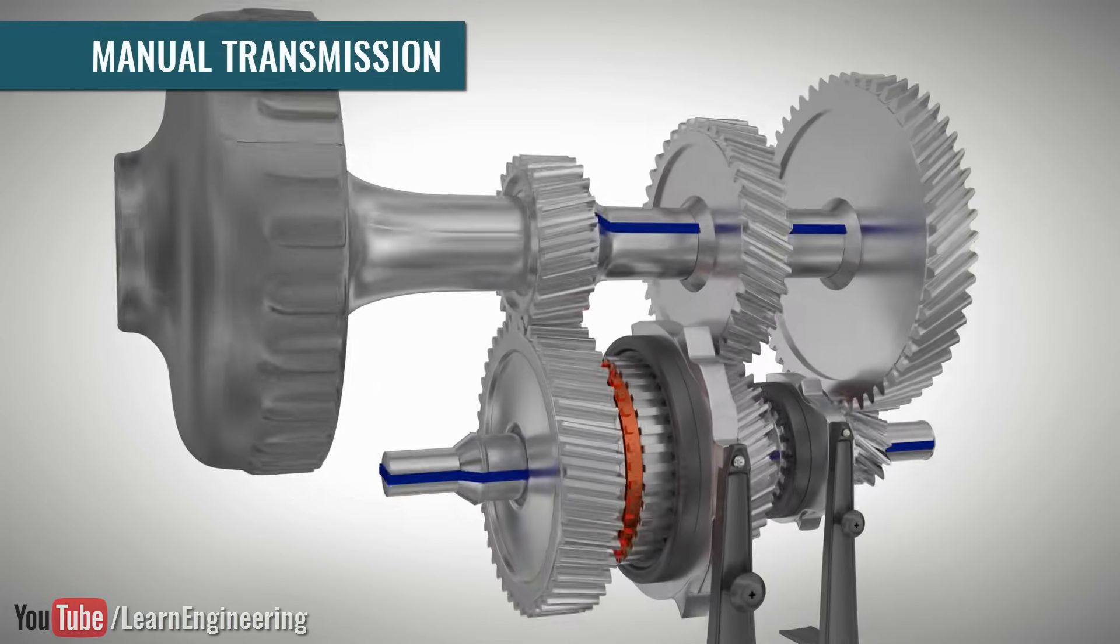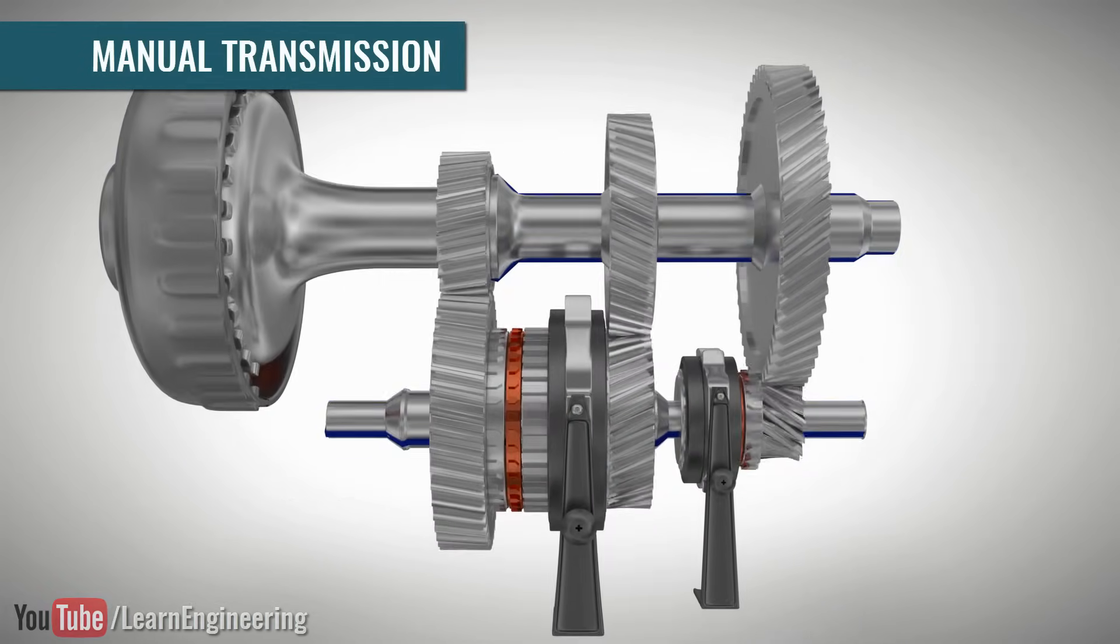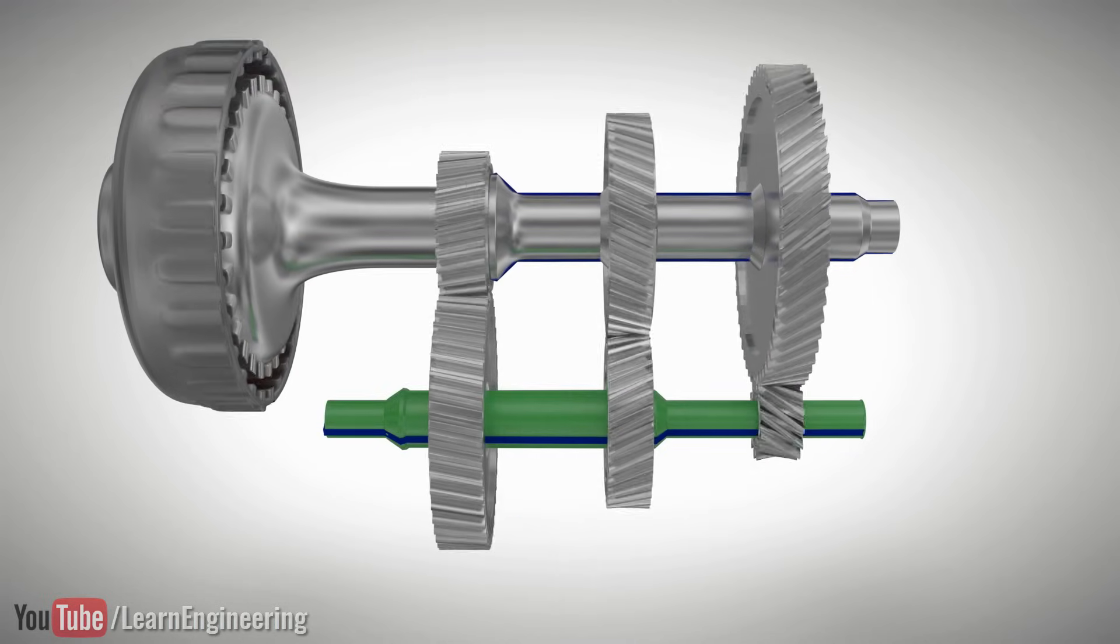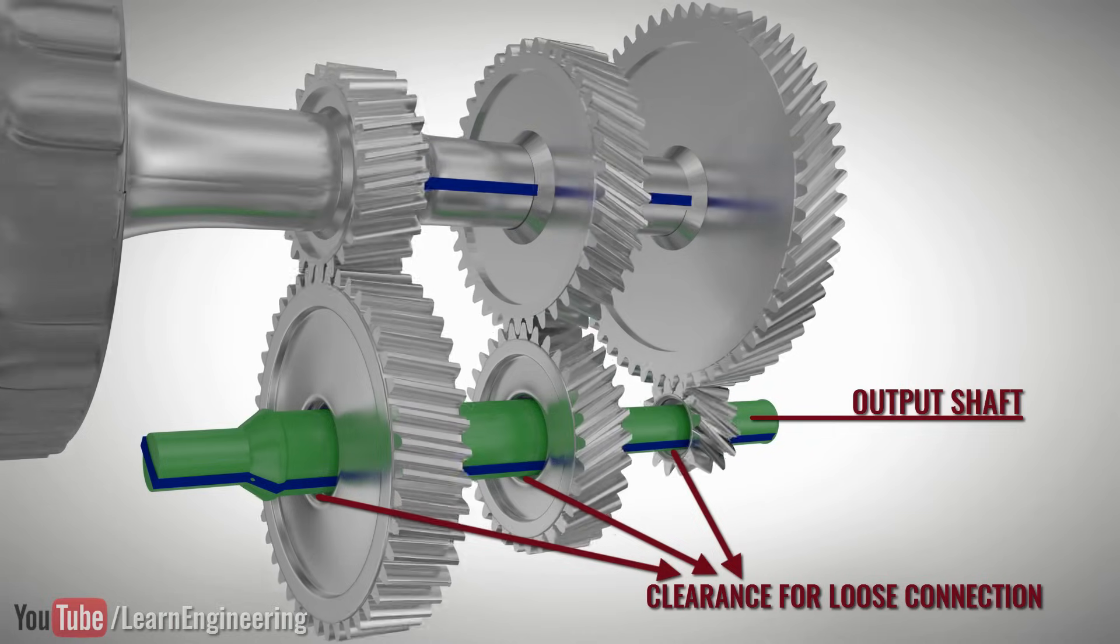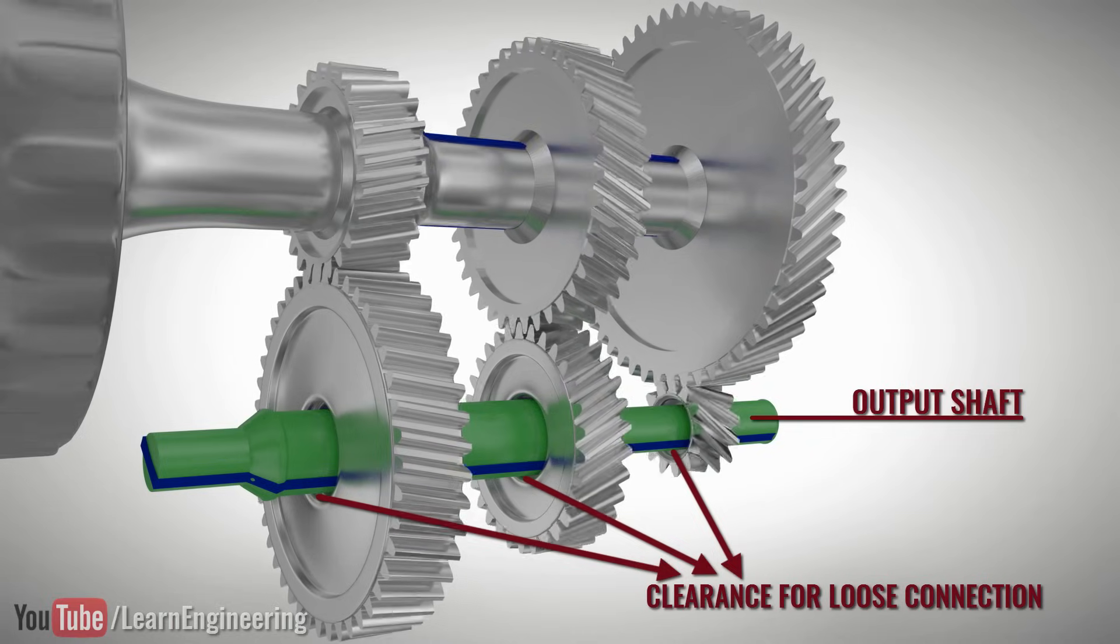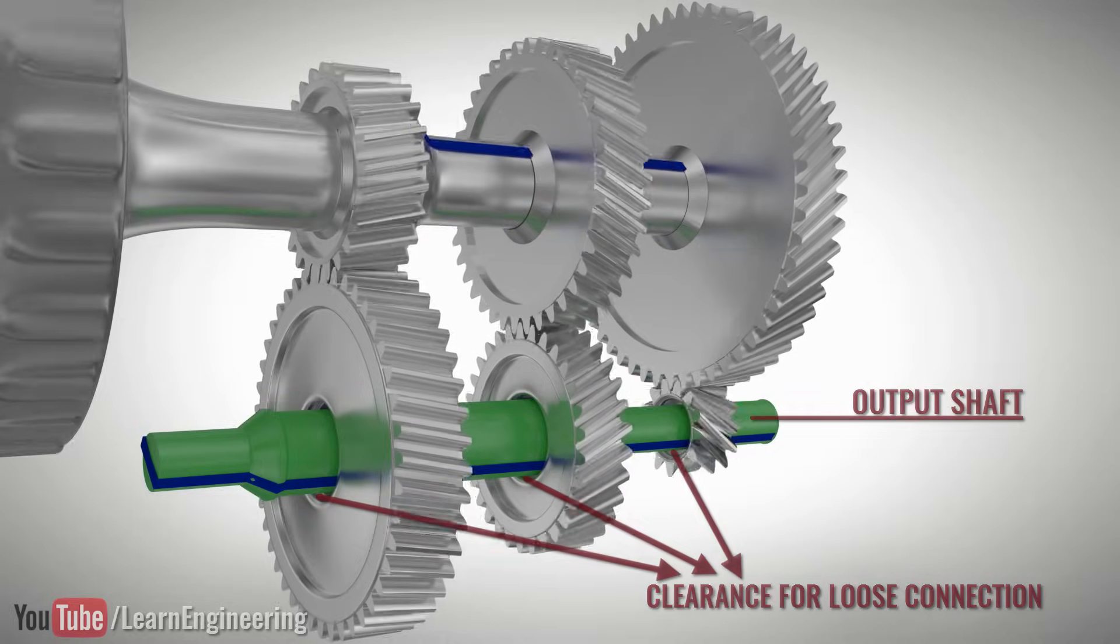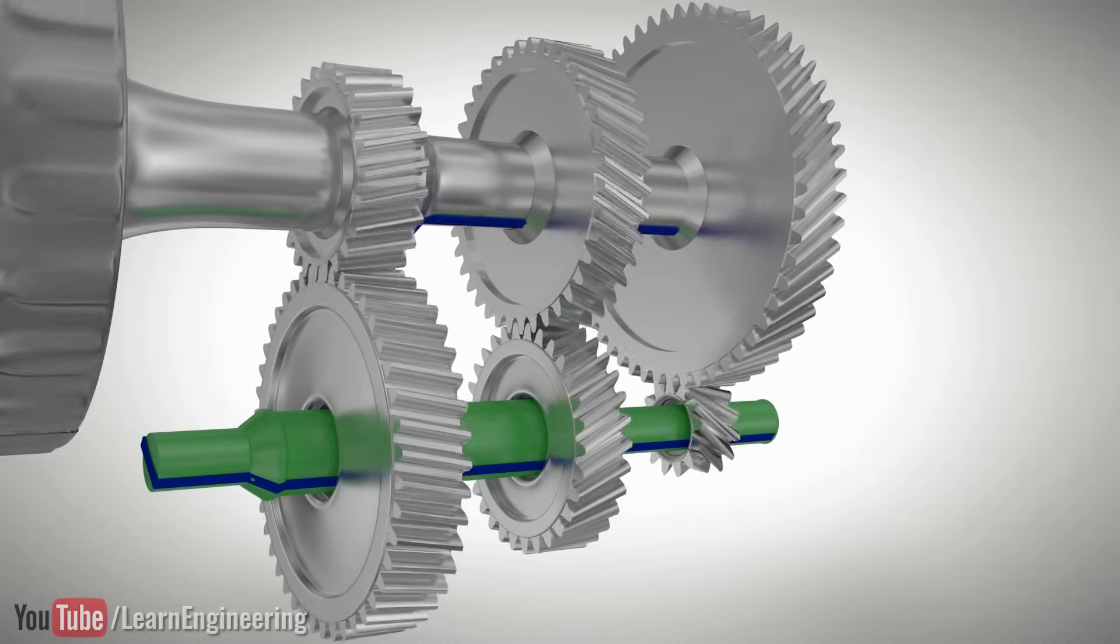This is a simplified manual transmission. Here, the gears are always in mesh. You can see that the output gears are loosely connected to the shaft. Only one output gear will be connected with the shaft at a time. This means that the speed ratio will be the ratio of the connected gear.